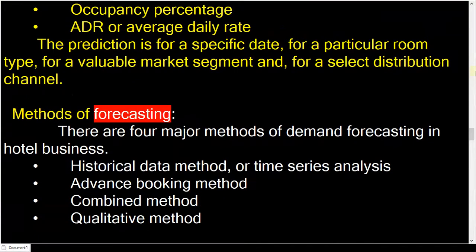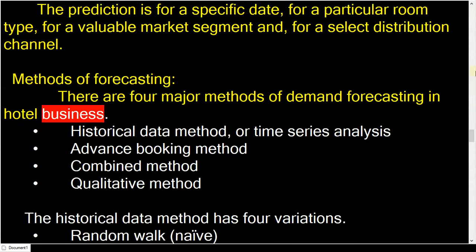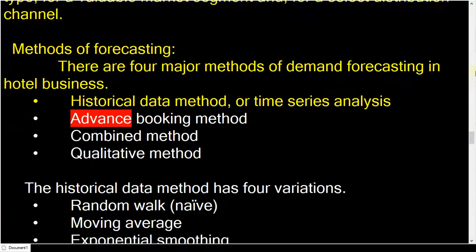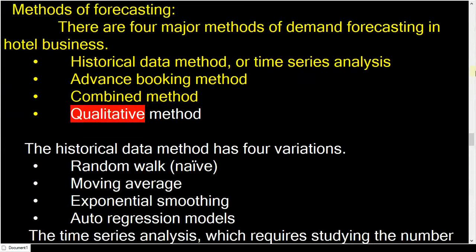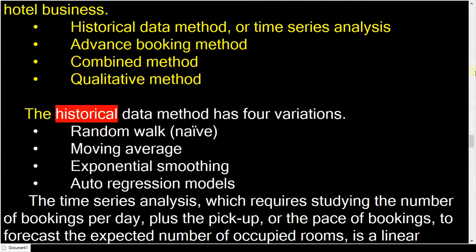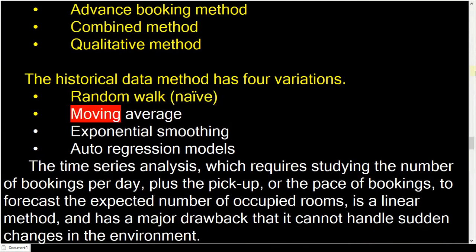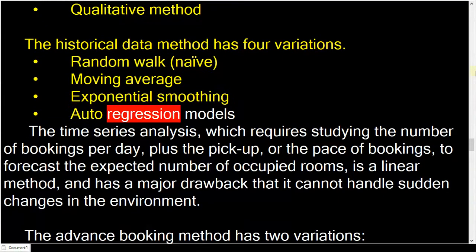There are four major methods of demand forecasting in hotel business. First, the Historical Data Method, or time series analysis. Second, the Advanced Booking Method. Third, the Combined Method. Fourth, the Qualitative Method. The historical data method has four variations: Random Walk, Moving Average, Exponential Smoothing, and Autoregression Models.